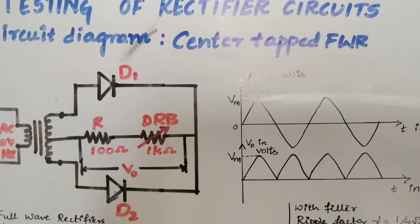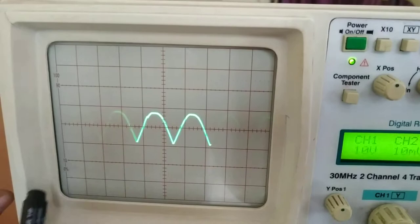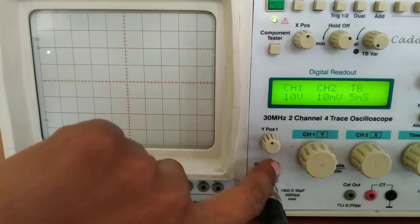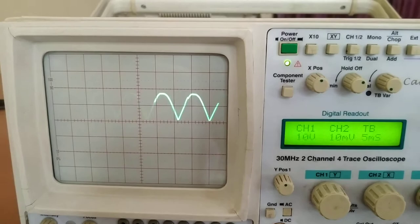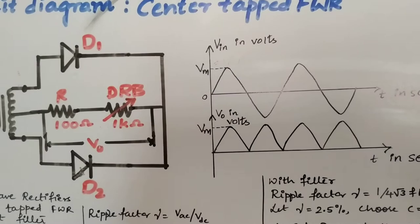Now observe the output by connecting CRO probes across the load resistor. In the CRO screen, you can see the output waveform, but since the output should be in DC, press the DC button to get the DC waveform. Note down the VM value: it is again approximately 1.8 units multiplied by 10 volts, giving about 18 volts. This is the output waveform of the center tapped full wave rectifier without filter.